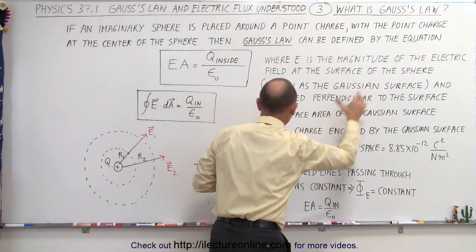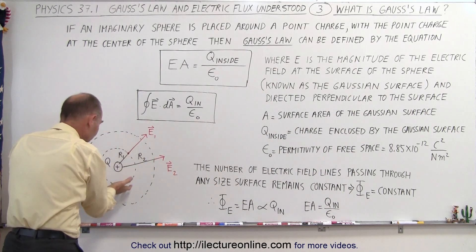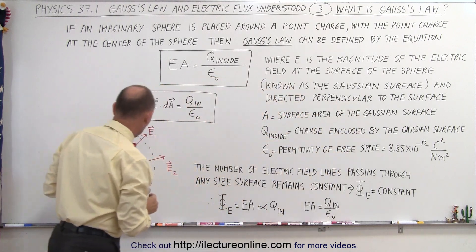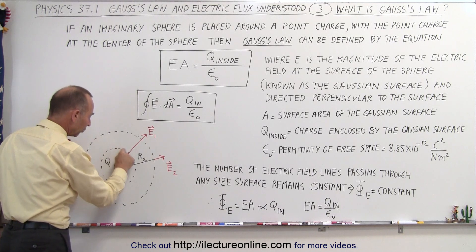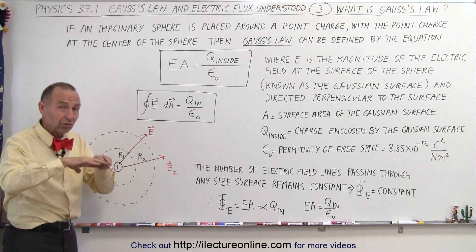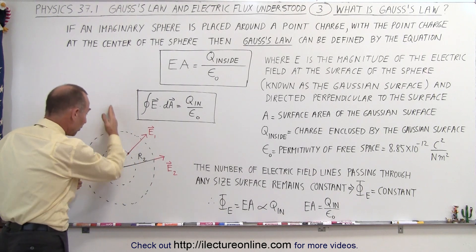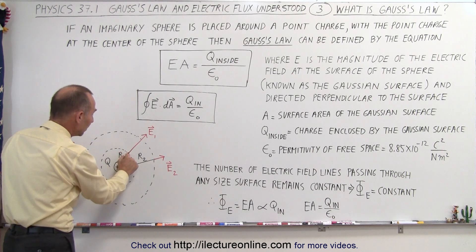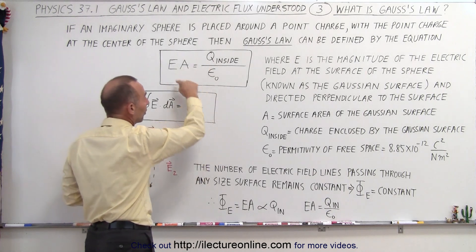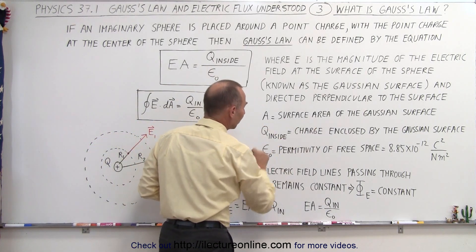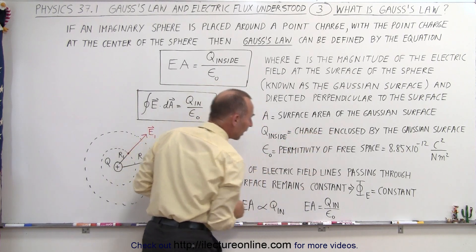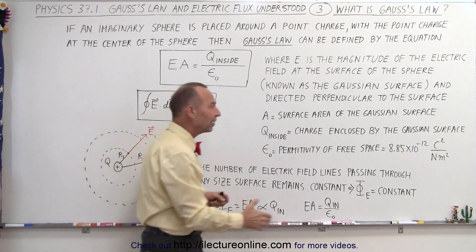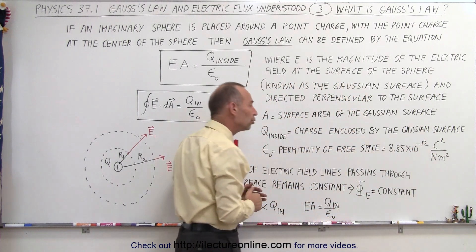The sphere is known as the Gaussian surface. Along the surface of the Gaussian surface, the electric field will be directed perpendicular to the surface. No matter where we look on the surface of that Gaussian surface, the electric field will be pointing directly perpendicular outward. A is the surface area of the Gaussian sphere, Q is the charge enclosed by the Gaussian surface, and epsilon sub nought is the permittivity of free space, defined as 8.85 × 10⁻¹² coulombs squared per newton meter squared.